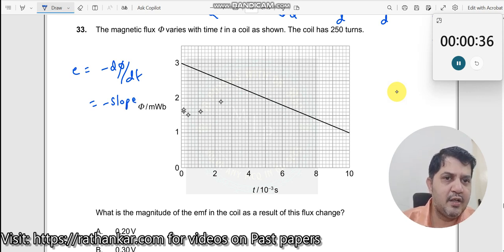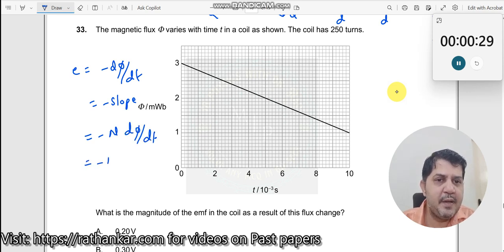Now, if it was one turn, this is right. If it was n turn, what you should do? It should be minus n dφ divided by dt, which should be minus n times slope.